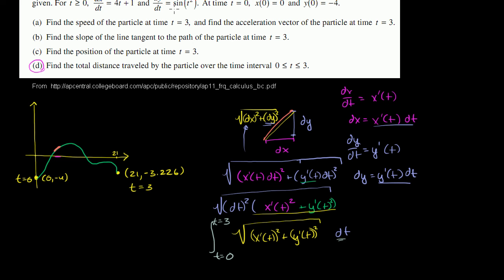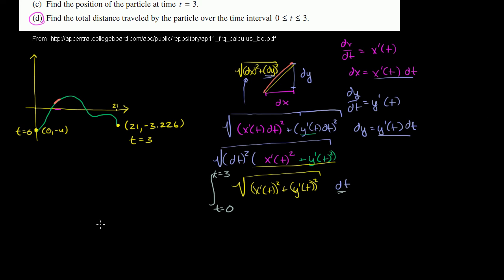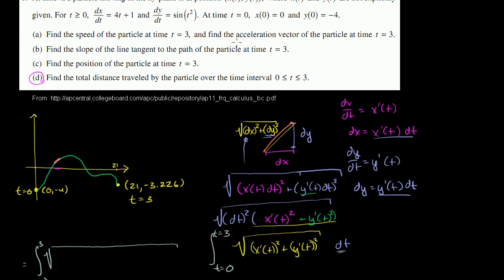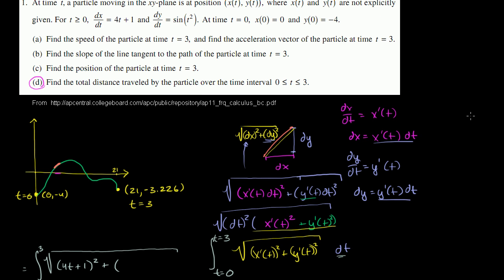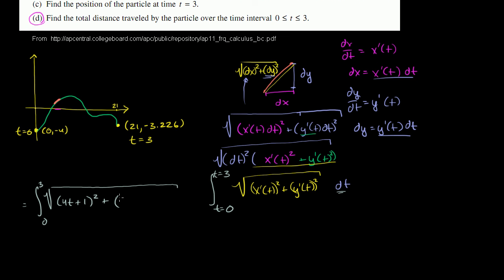Now we just do it. They tell us what x'(t) and y'(t) are. This is going to be equal to the integral from 0 to 3 of the square root of x'(t)² plus y'(t)². x'(t) is 4t + 1, so it's (4t + 1)² plus [sin(t²)]². This is not simple to find the antiderivative of. But lucky for us, we're allowed to use our calculators.